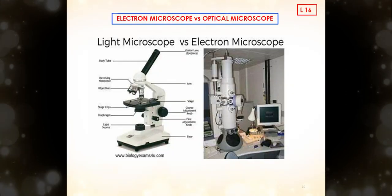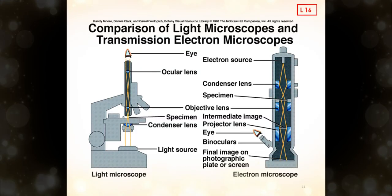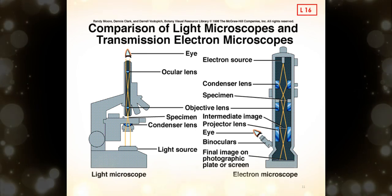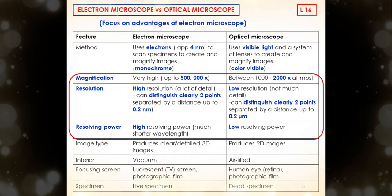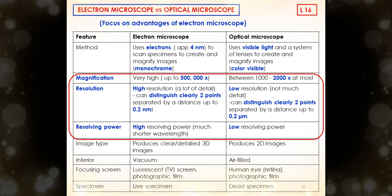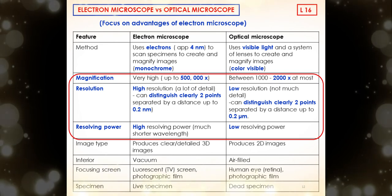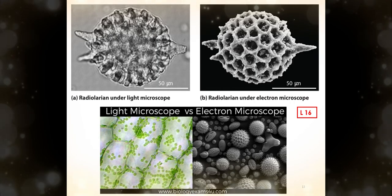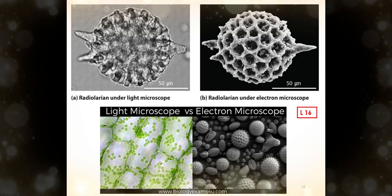Here we can see the differences or the comparison between electron microscope and optical microscope, also known as light microscope. Please focus only on electron microscope that have been circled with red color. Here we can see how detailed is the image we can see from electron microscope compared to the image seen from the optical microscope.